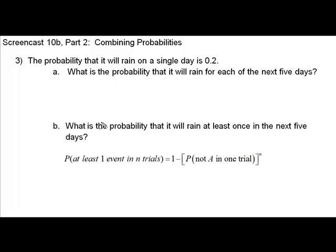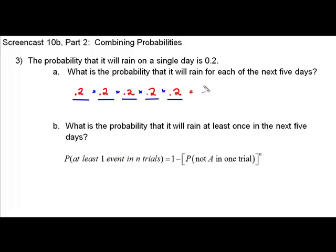Because we have five days, we are going to look at a setup that involves five probabilities. And because they are multiple events, we are going to be multiplying. The probability that it will rain on a single day is 2 tenths, so we have 2 tenths times 2 tenths times 2 tenths times 2 tenths times 2 tenths. This can be written more easily as 2 tenths to the fifth power, five representing each of our five days. When we multiply this out, we get a decimal answer of thirty-two hundred thousandths.